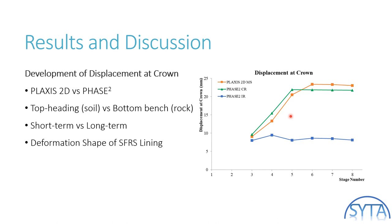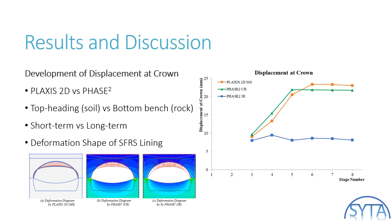If focusing on the top heading, the deformation increases with the process of ground relaxation and is well controlled within a reasonable level to ensure tunnel stability. Lastly, the deformation shapes of the temporary lining by the three approaches are presented. The first two have similar shapes, with the crown deforming downwards and side walls outwards. However, the Phase2 IR method shows the lining deforming all towards the internal opening, which is not a good sign from the structural design point of view. This could further imply that Phase2 modeling in IR method may not be suitable for staged tunnel excavation in mixed ground.